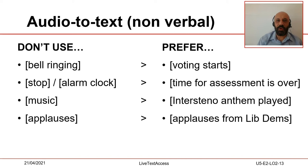Also, try to avoid general captions like [music], which means nothing to the eyes of the reader. Being more specific, like [national anthem being played], is for sure more useful and informative. Finally, try to be as exhaustive as possible and use more words than you may think are enough. Instead of [applauses], prefer [applauses from Lib Dems] if you are subtitling a political speech, as [applauses] may generate confusion and make the reader think the whole parliament approves what is said by the speaker.